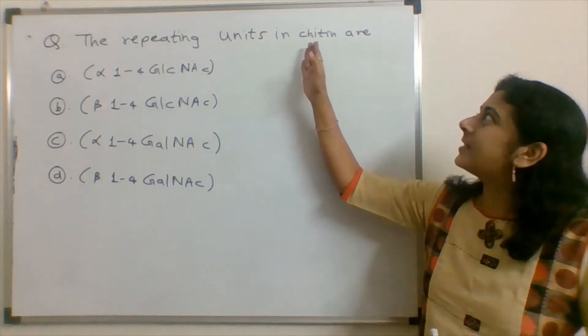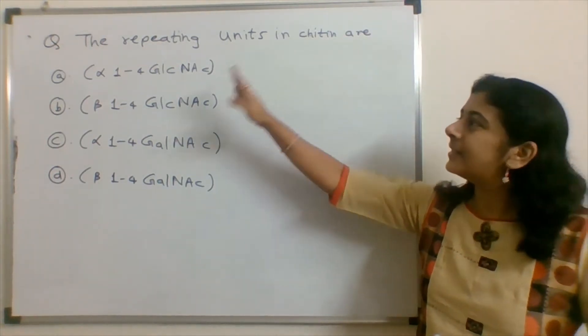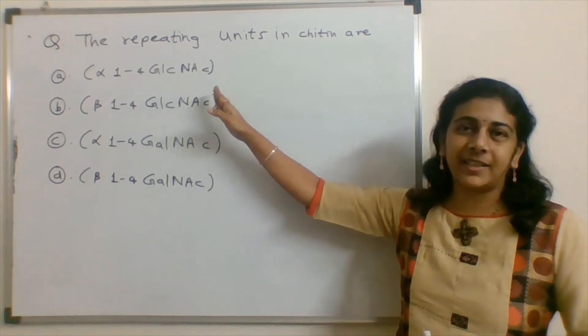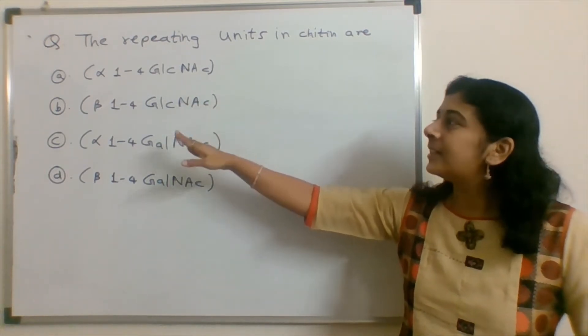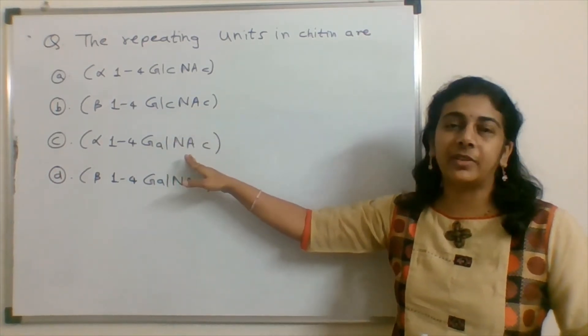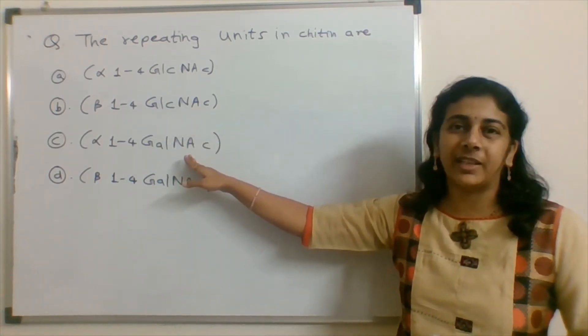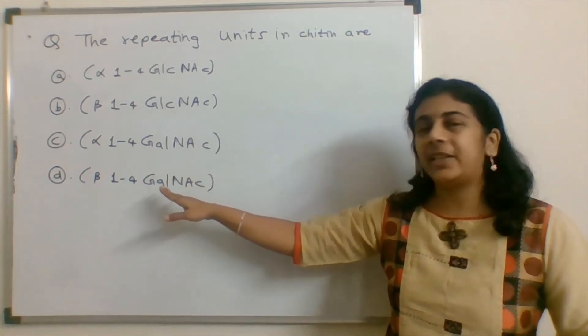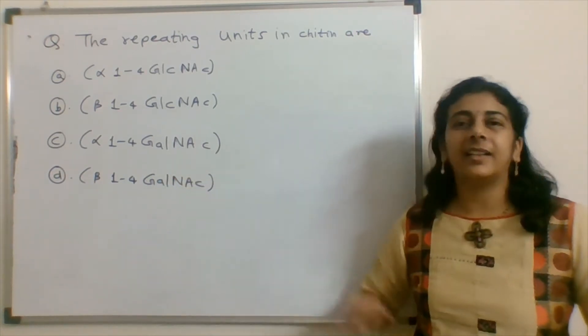The repeating units in chitin are: A) Alpha-1,4 N-acetylglucosamine, B) Beta-1,4 N-acetylglucosamine, C) Alpha-1,4 N-acetylgalactosamine, or D) Beta-1,4 N-acetylgalactosamine.